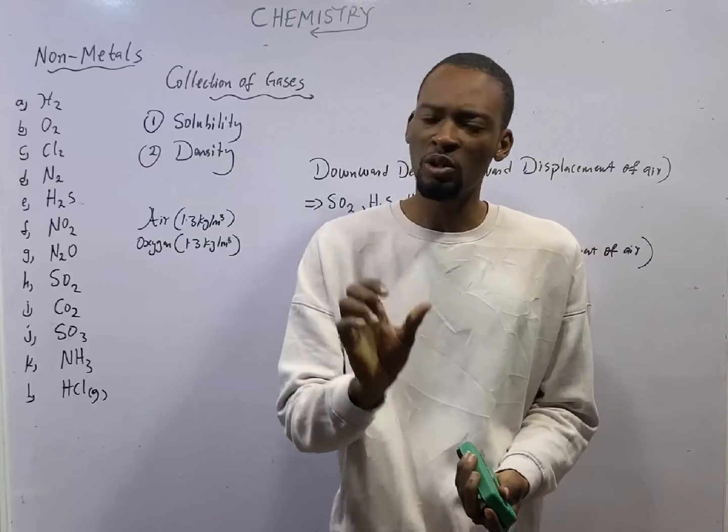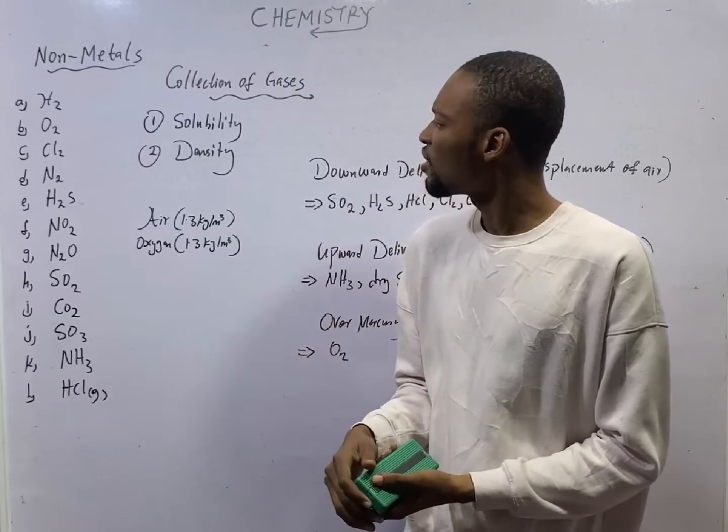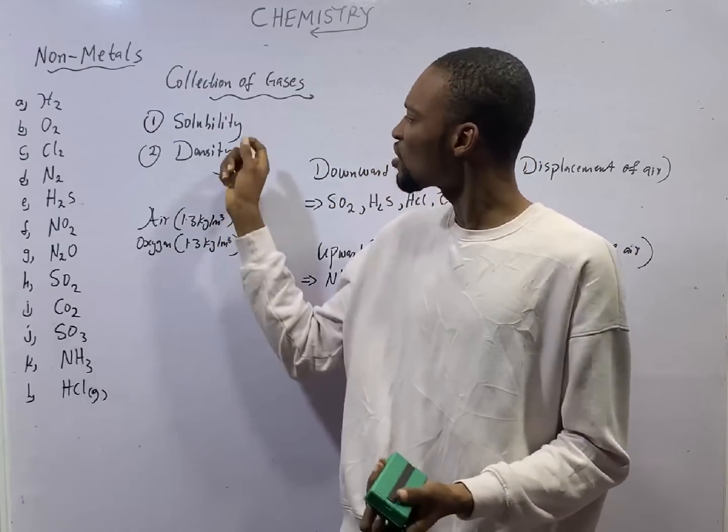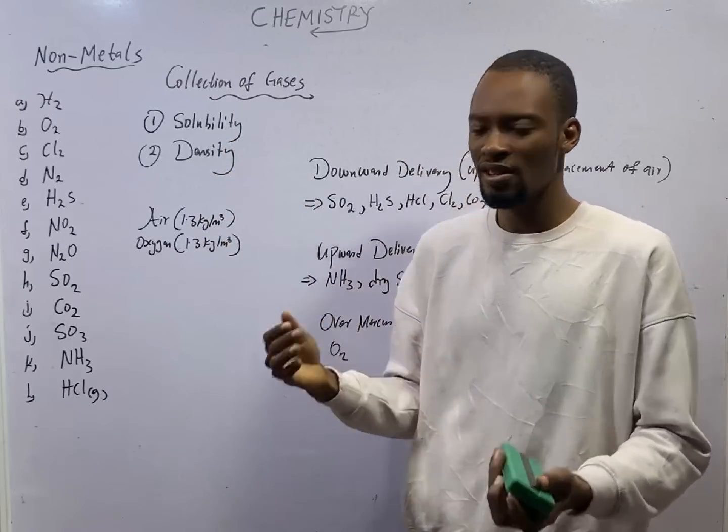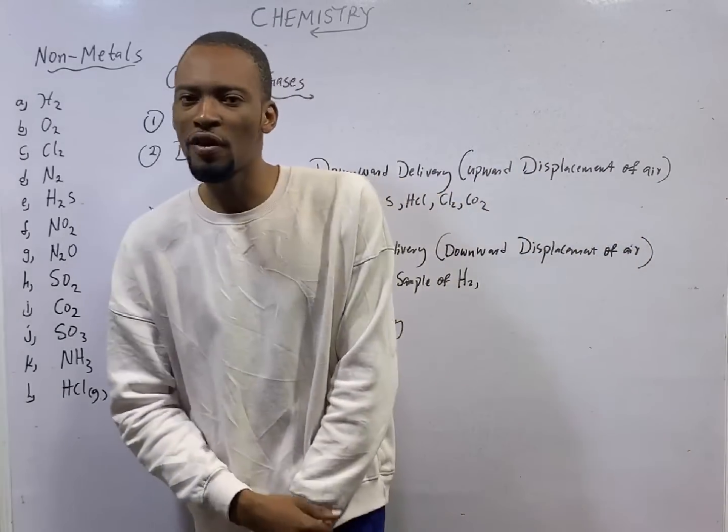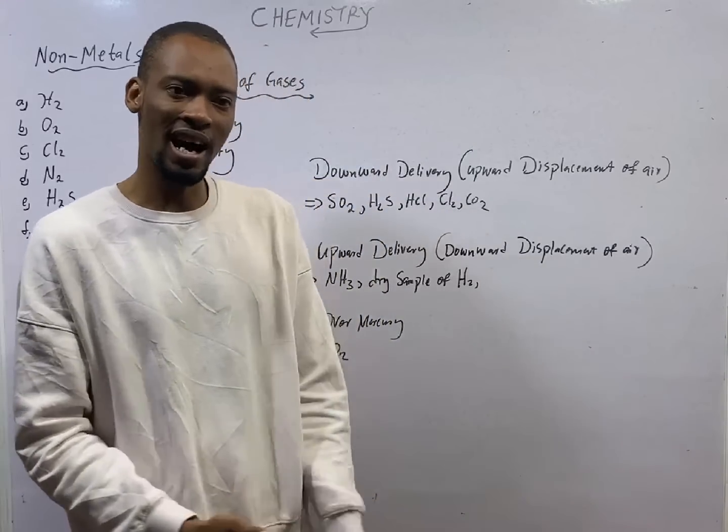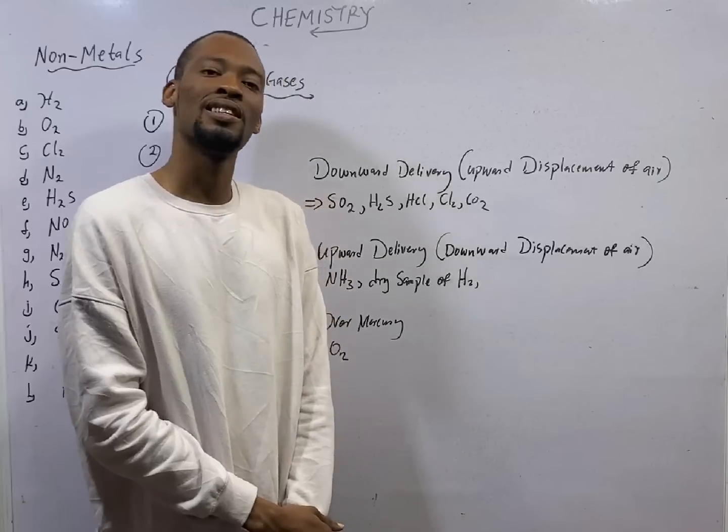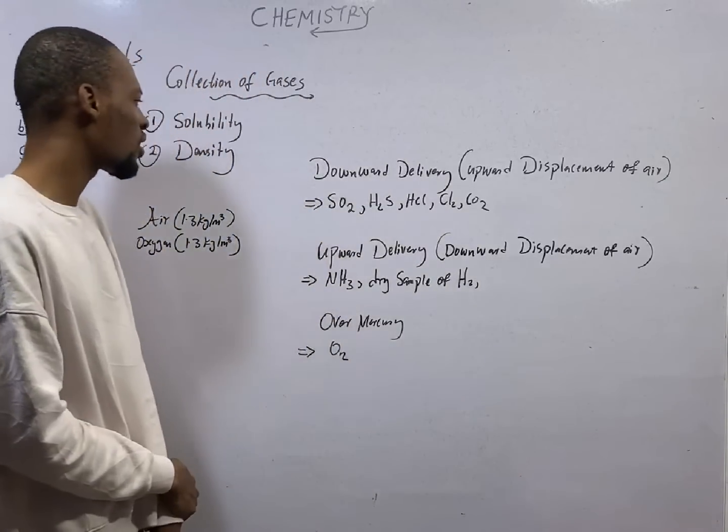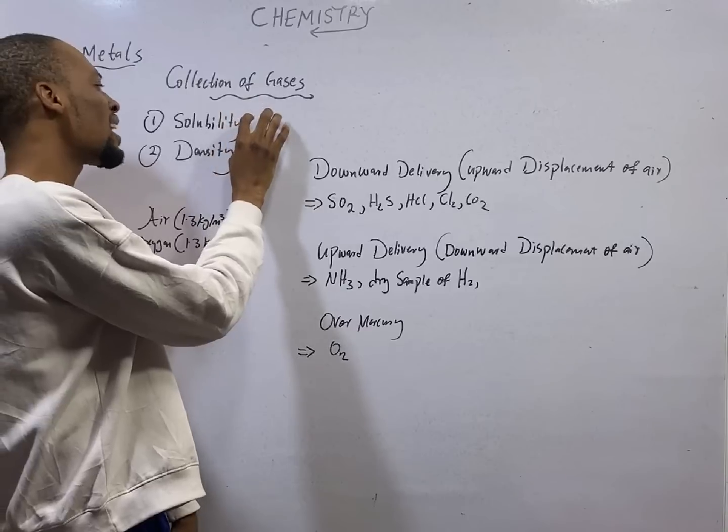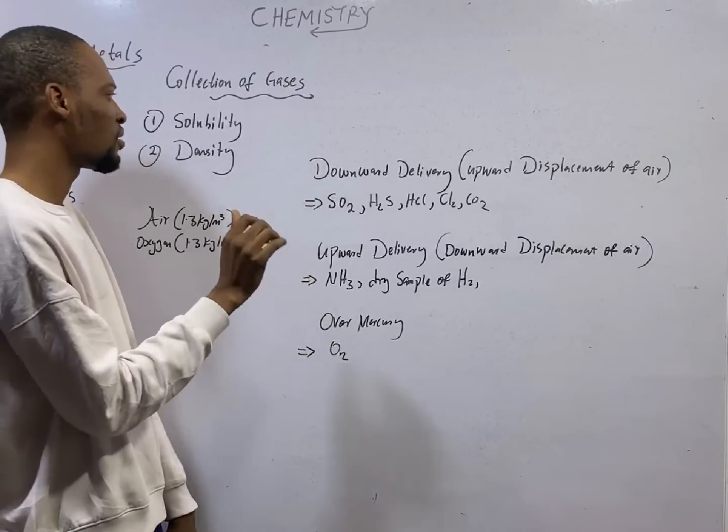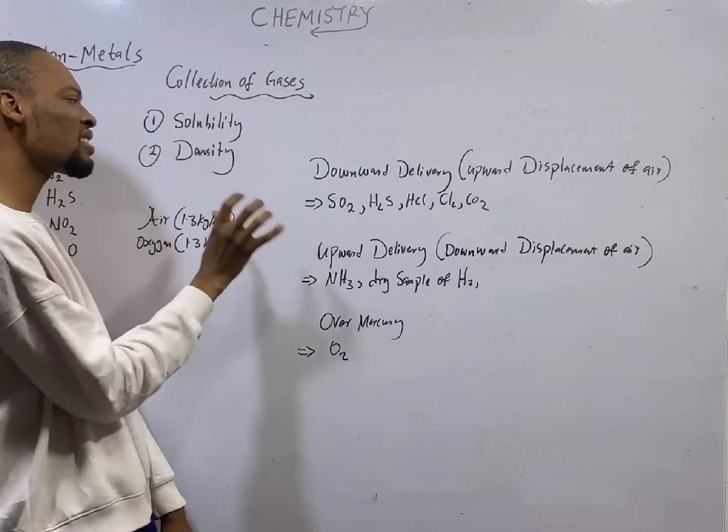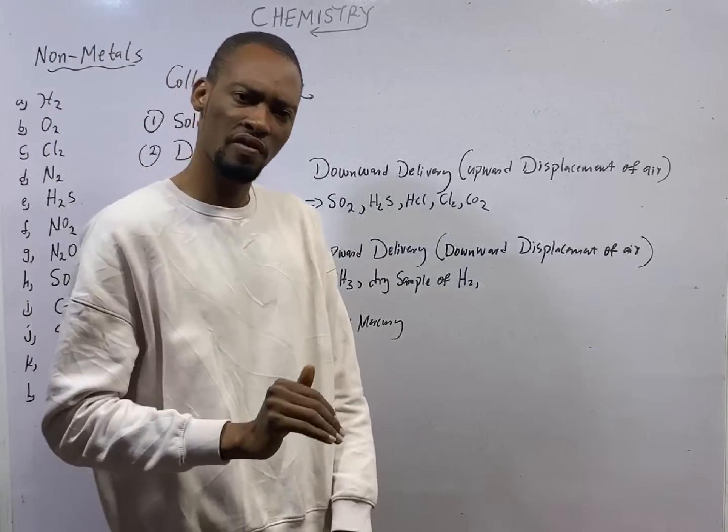How do we collect gases? There are two factors that determine collection or how we collect various gases. They are solubility and density. You will be asked, which of the following factors determine how gases are collected? If you see solubility, it is correct. If you see density, it is correct. Solubility has to do with whether it dissolves in solution, while density is mass of that substance per unit volume.